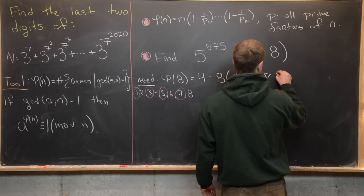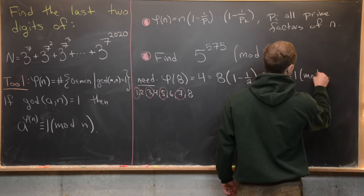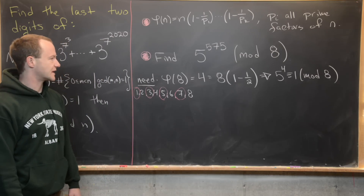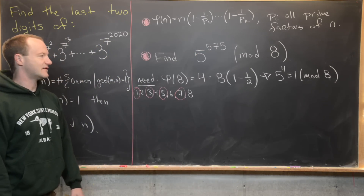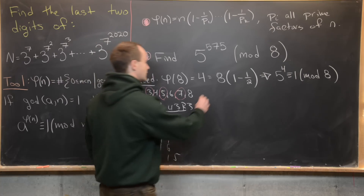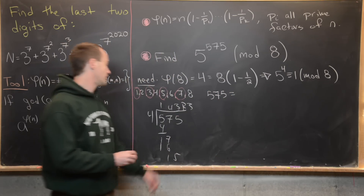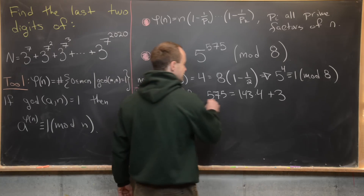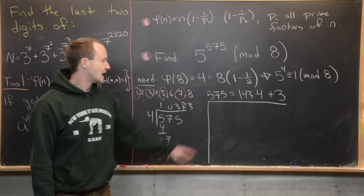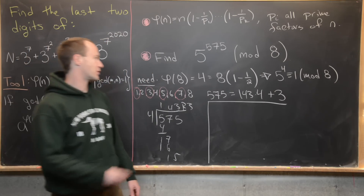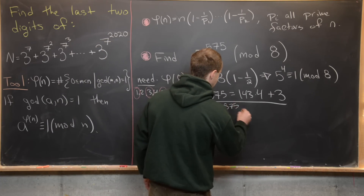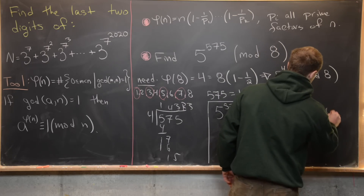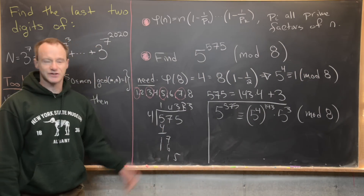Since 5 and 8 are relatively prime, Euler's generalization tells us that 5 to the 4 is congruent to 1 mod 8. Next, we divide 575 by 4. We can write 575 as 143 times 4 plus 3. Then we rewrite 5 to the 575 as (5 to the 4) to the 143, times 5 cubed — and this is all happening mod 8.